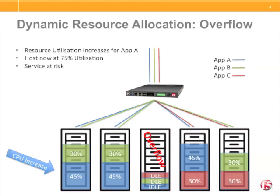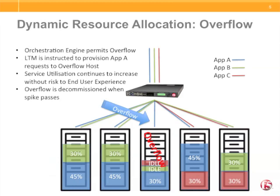Now we can see that application A's resource requirements have increased, pushing some hosts to 75% utilization. Service is now at risk. Next, the orchestration engine permits application A to access its instance running on the overflow host. The service utilization continues to increase, but with no risk to end user experience.